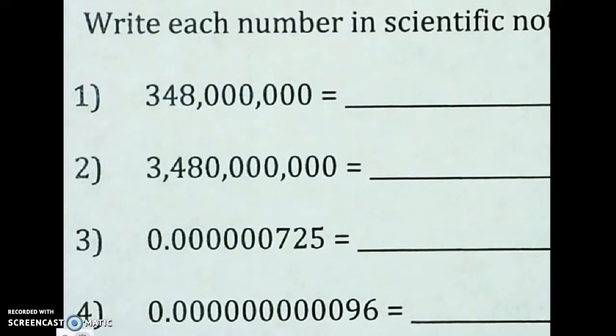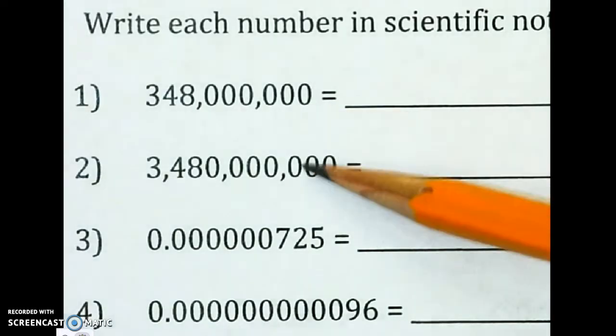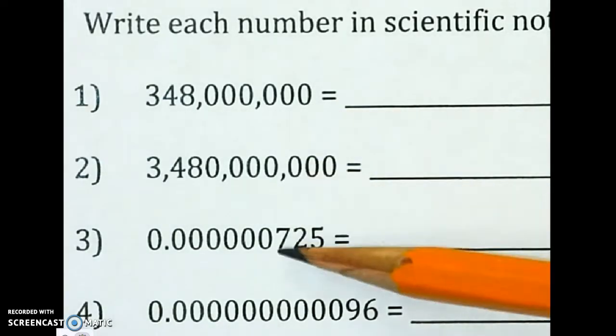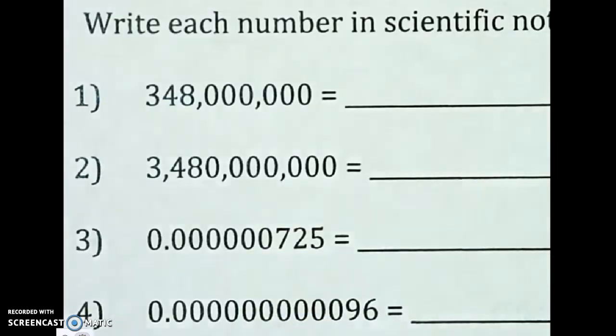All right, let's do some scientific notation. I'm going to take these numbers and write them in scientific notation. When you have a big number, you're going to have a positive power. When you have a very small number, you're going to have a negative power.